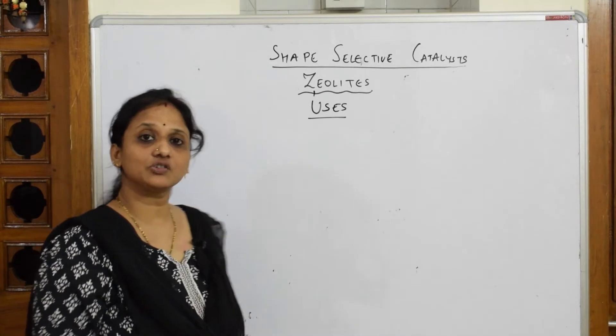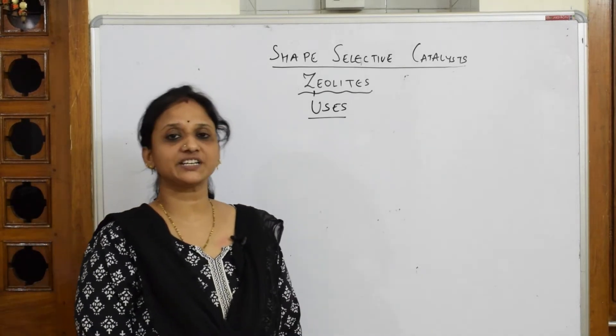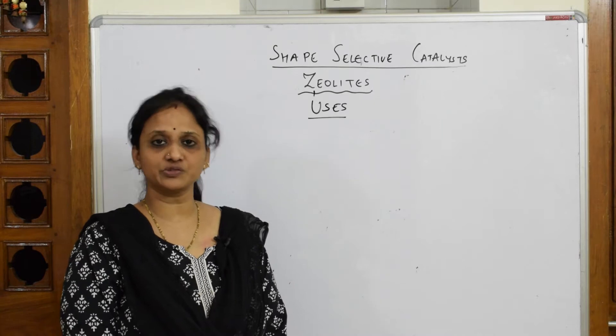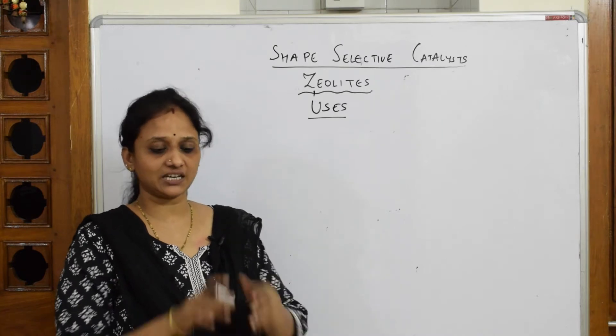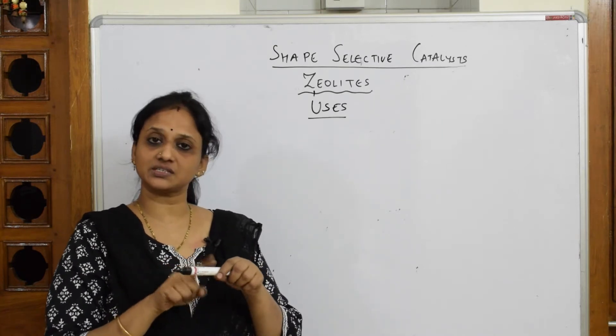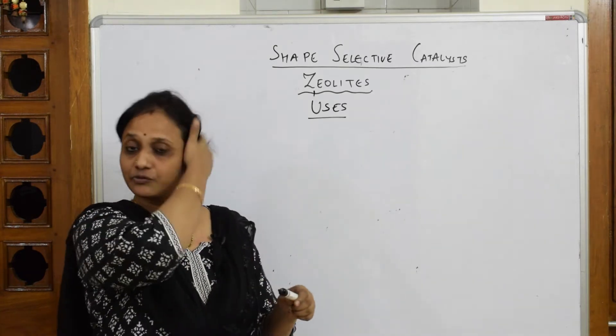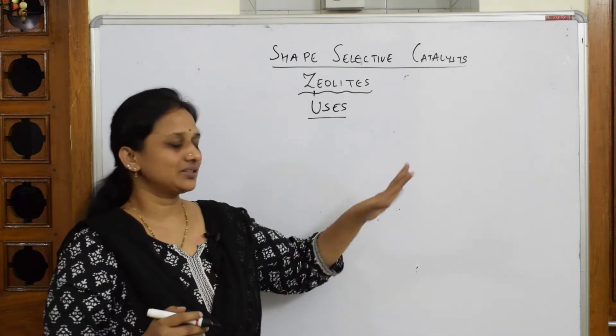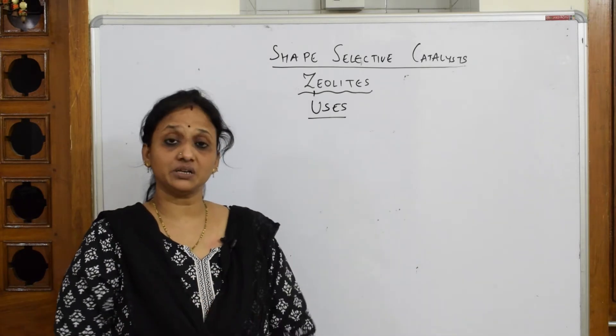We have already learned the concept of zeolite — they are microporous alumino-silicate networks. They have a network of alumina, oxygen, and silica in the form of a honeycomb structure.